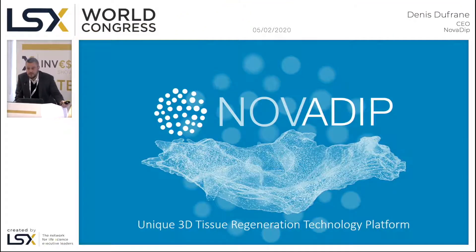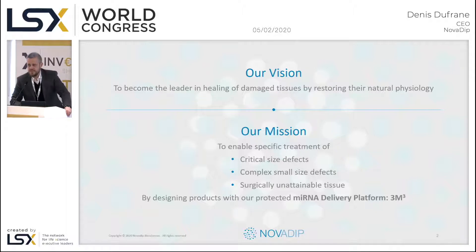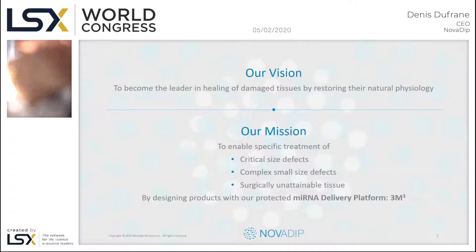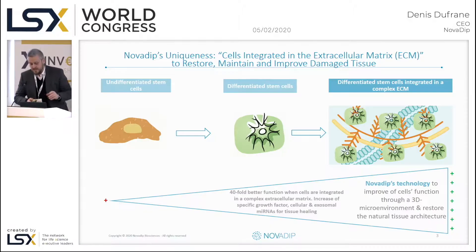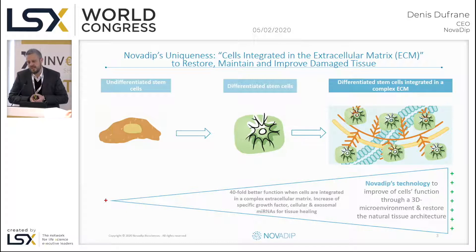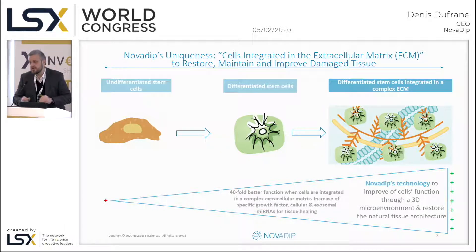Novadip's mission aims to heal tissue damage by the restoration of the natural physiology of the tissue — not for simple defects but for complex defects in terms of critical size, complex microenvironment, and inaccessible tissue. The mission is addressed by a microRNA delivery platform called 3M3. The goal is to restore both the function and architecture of the native tissue.